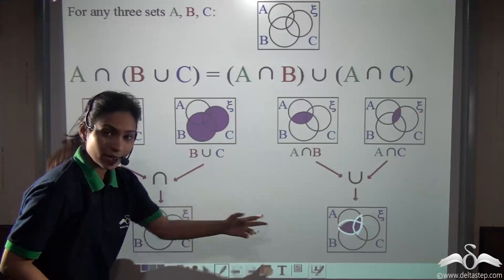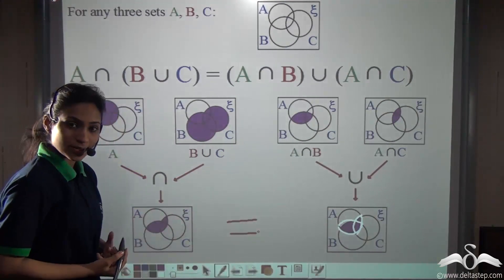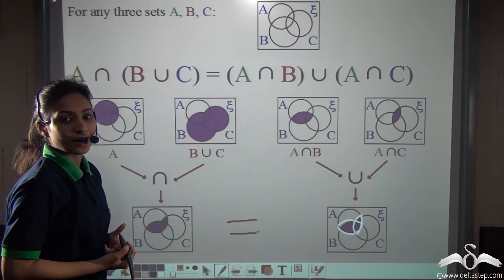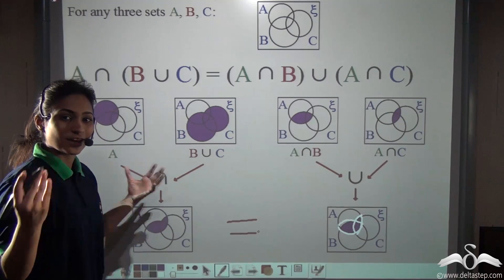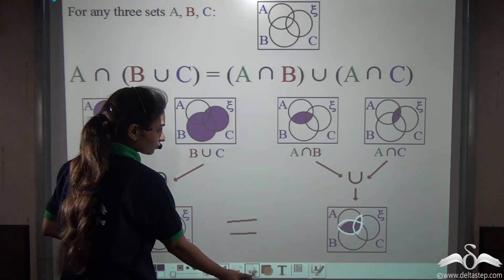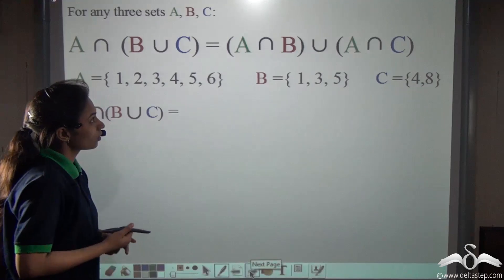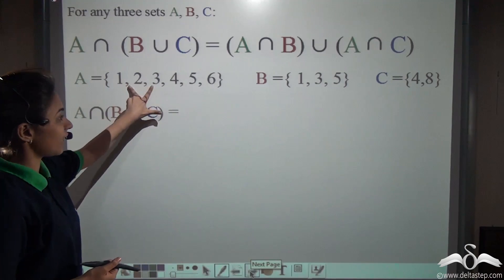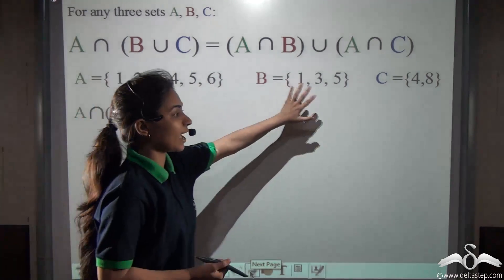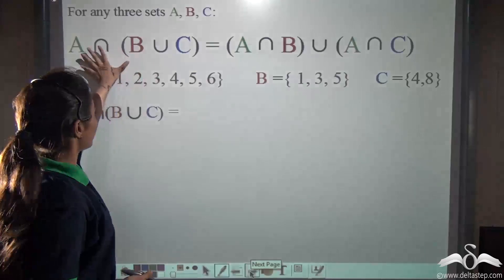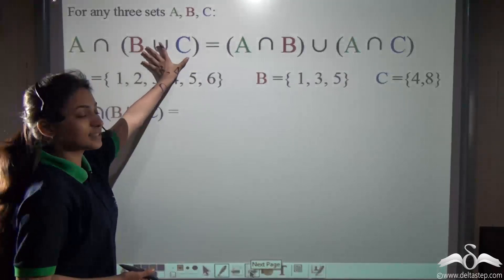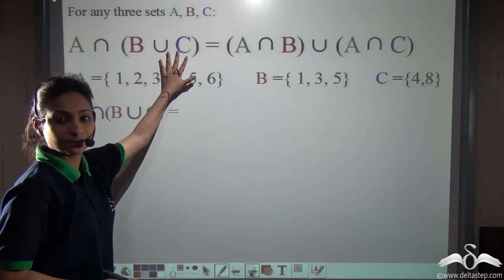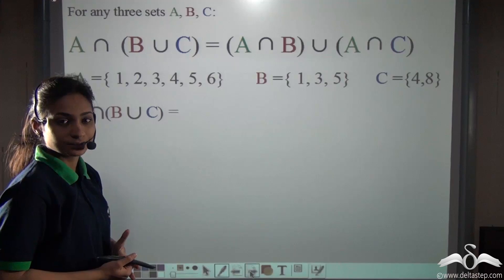Both are equal — with the Venn diagram you can see that. Again, let's do a sum to find out whether we get the same answer. Here I have given you set A, set B and set C. First find out the left hand side, A intersection (B union C), and tell me the answer.